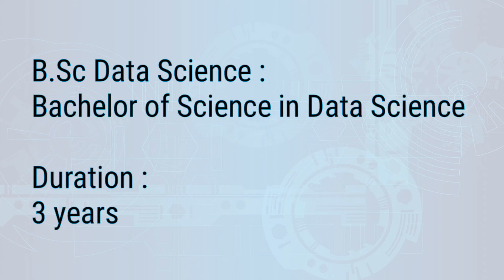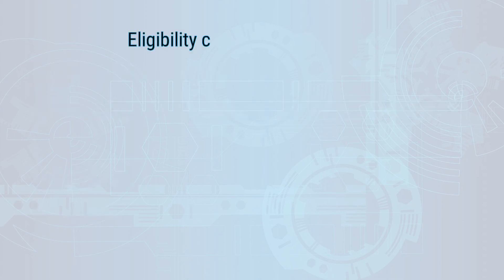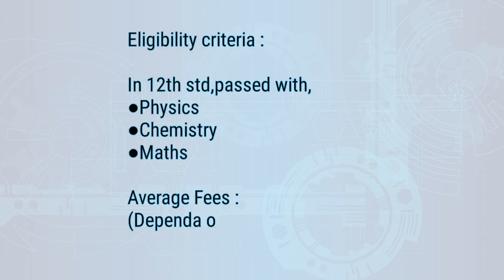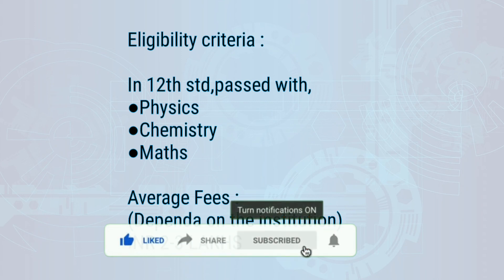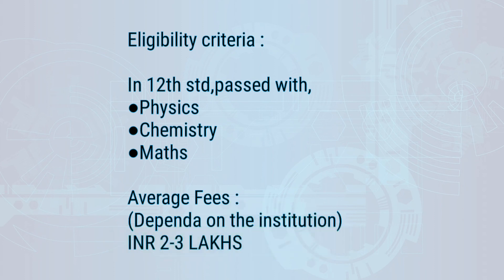BSc Data Science is a science degree. BSc stands for Bachelor of Science, and the full form is Bachelor of Science in Data Science. The duration of this course is 3 years. For eligibility criteria, you should have studied 12th standard with Physics, Chemistry, and Maths. So if you are a science student, you will be able to opt for this course. After finishing this course, you can expect an average salary of 2 to 3 lakhs.